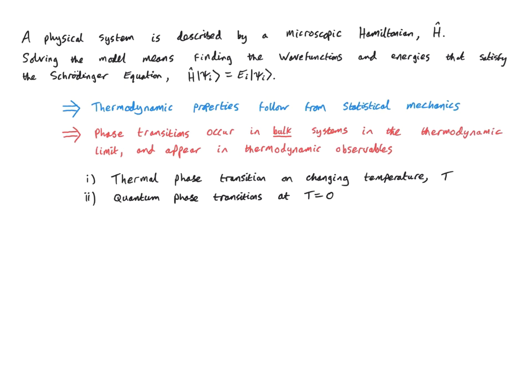Phase transitions occur really in bulk systems — systems in the thermodynamic limit of a large number of particles. We can't really talk about phase transitions in a system of just a few particles, because the framework we use requires a statistical mechanical treatment that works in the thermodynamic limit. In a closed quantum system of a few particles we can talk about a change in ground state and how expectation values change, but this is different from bulk thermodynamic properties, which is what I want to discuss in this lecture.